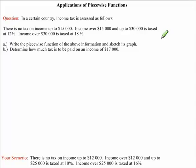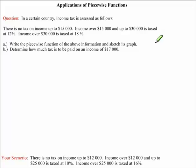Our question reads: In a certain country, income tax is assessed as follows. There is no tax on income up to $15,000. Income over $15,000 and up to $30,000 is taxed at 12%. Income over $30,000 is taxed at 18%. We are first asked to write the piecewise function of the above information and to sketch its graph.